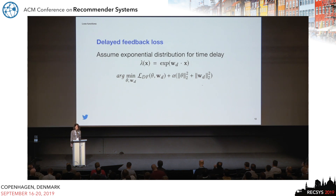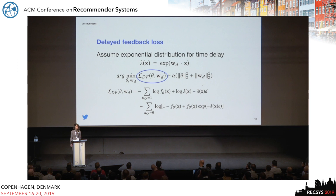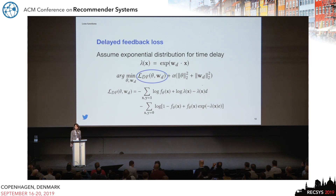For the delayed feedback loss, as mentioned earlier, we assume an exponential distribution for the time-to-click delay, since this is a reasonable choice based on our empirical data. That entails introducing a term in the traditional cross-entropy loss that accounts for the time elapsed since impression for unclicked ads, and the time until engagement for clicked ads.